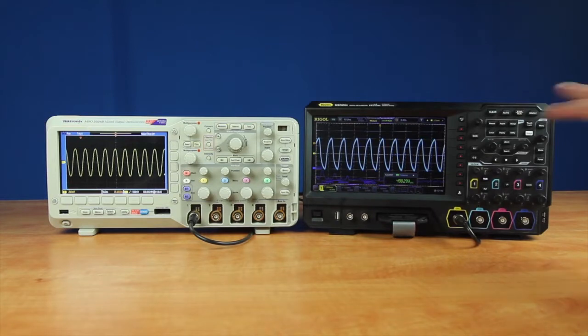We've already turned on the color grading display, the frequency counter, and the FFT. And we're still running right at about 500,000 waveforms per second. A hundred times more than Tektronix.